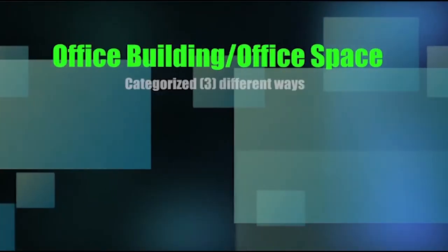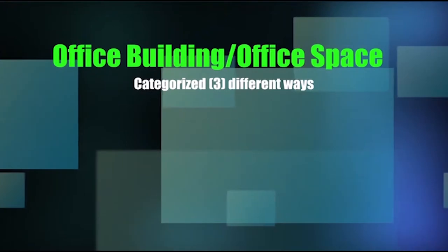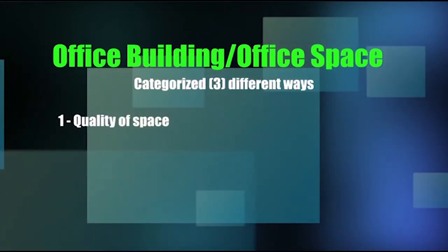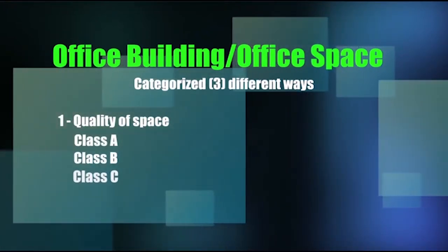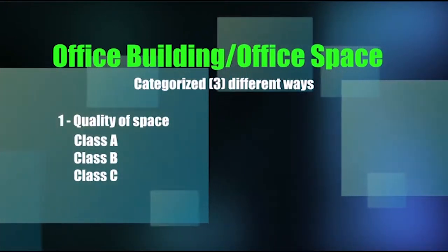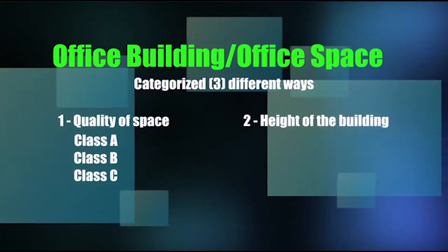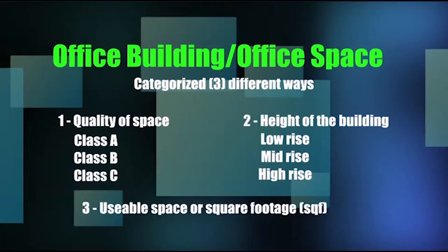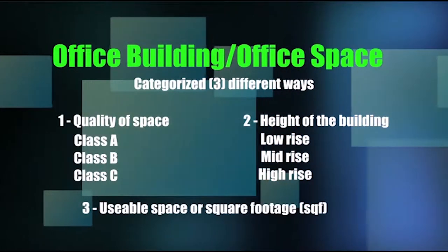Office buildings are generally categorized three different ways: by the quality of space — Class A, Class B, and Class C — by the height of the building — low-rise, mid-rise, or high-rise — or by usable space or square footage.